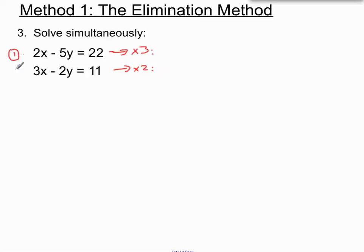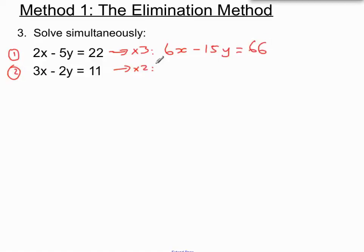We could number these equation 1 and equation 2. The reason I'm multiplying the first by 3 is to create 6x, and multiplying the second by 2 will also create 6x — deliberately matching up the x terms. So 3 times each term gives us 6x, 3 lots of minus 5y is minus 15y, and 3 lots of 22 is 66. Then multiplying the second equation by 2: 6x, 2 times minus 2y is minus 4y, and 2 times 11 is 22.